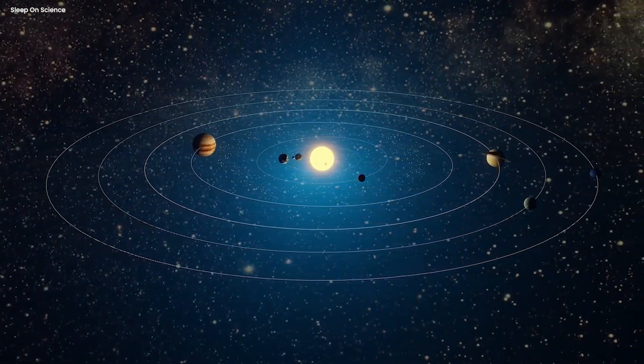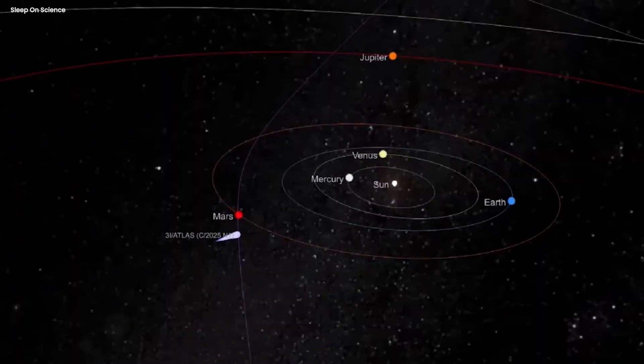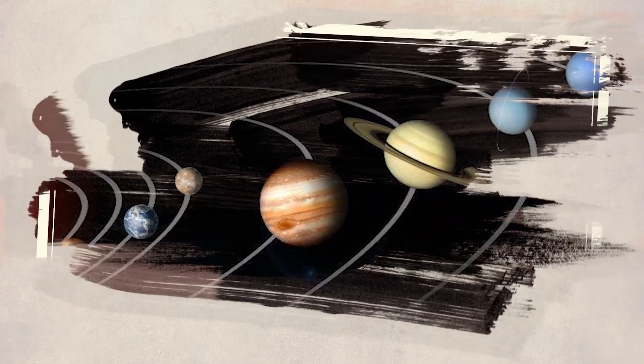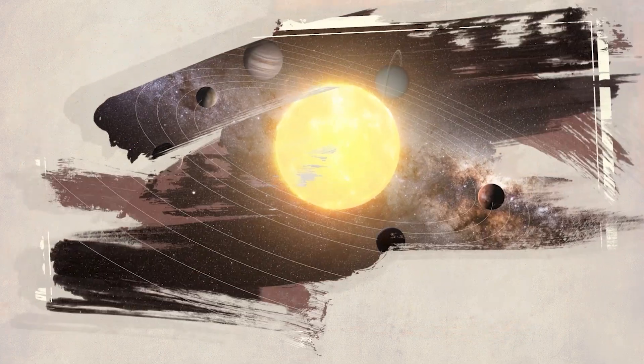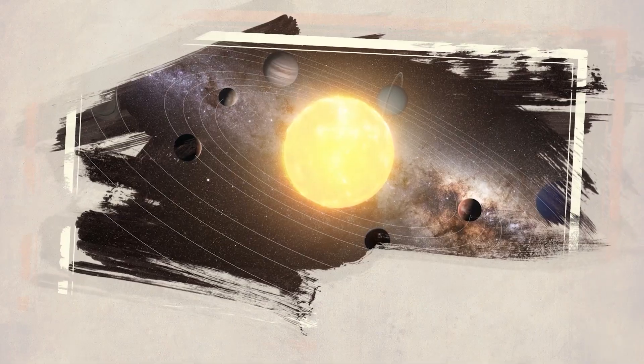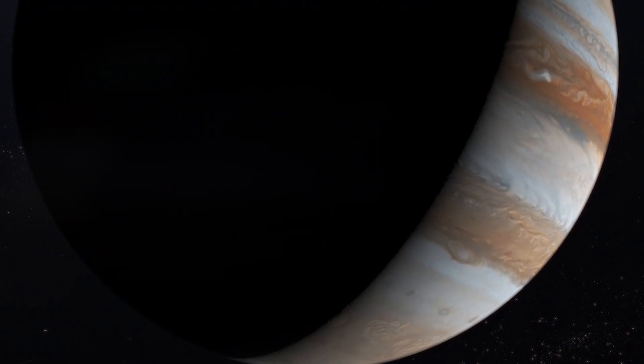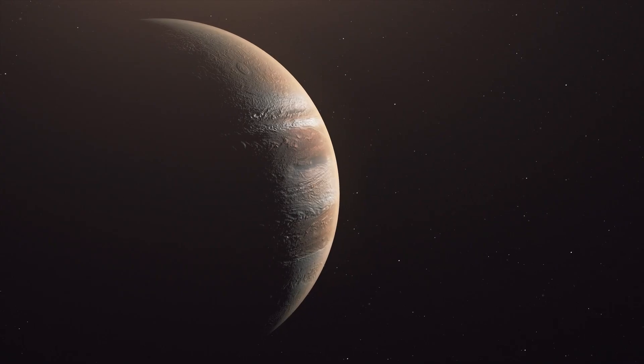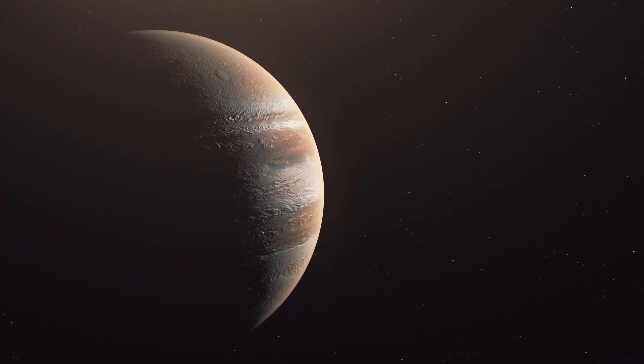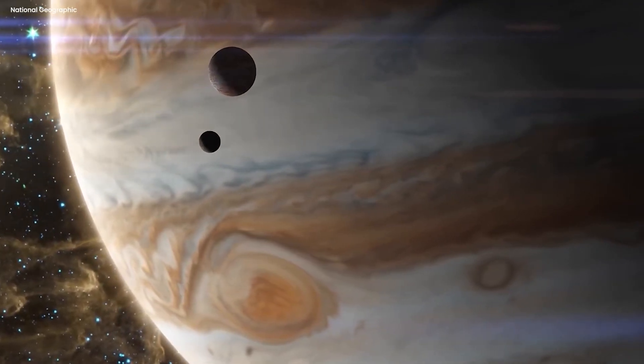Jupiter has more mass than every other planet in the solar system combined. All of them. Mercury, Venus, Earth, Mars, Saturn, Uranus, Neptune, all the dwarf planets, all the asteroids, all the comets, everything. If you add up the mass of every single object in the solar system except the Sun, Jupiter is still heavier than half of that total. It's so big that if you hollowed it out, you could fit over 1,300 Earths inside. And its gravity is so strong that it's basically the second most important gravitational force in the solar system after the Sun.